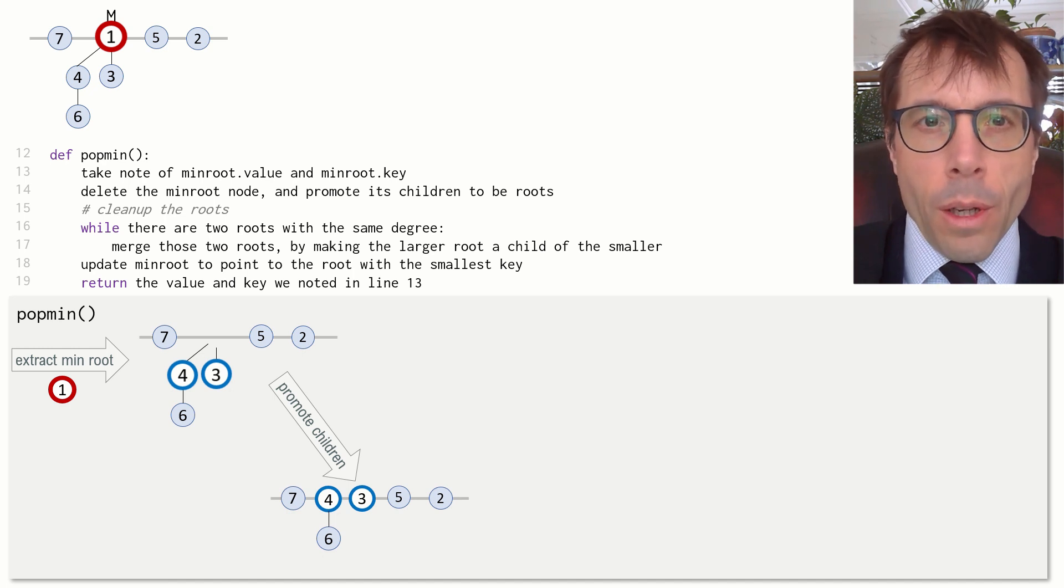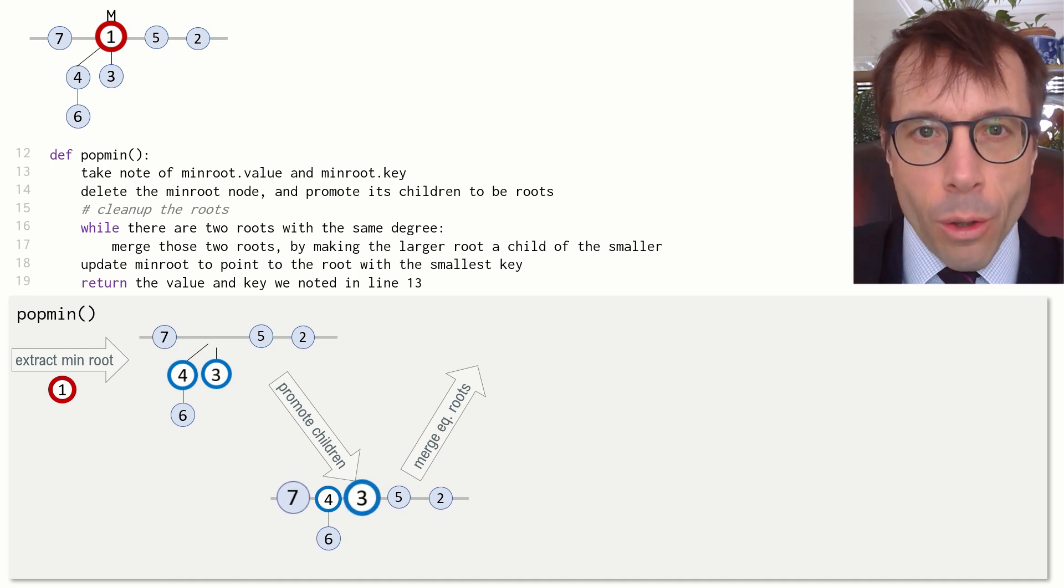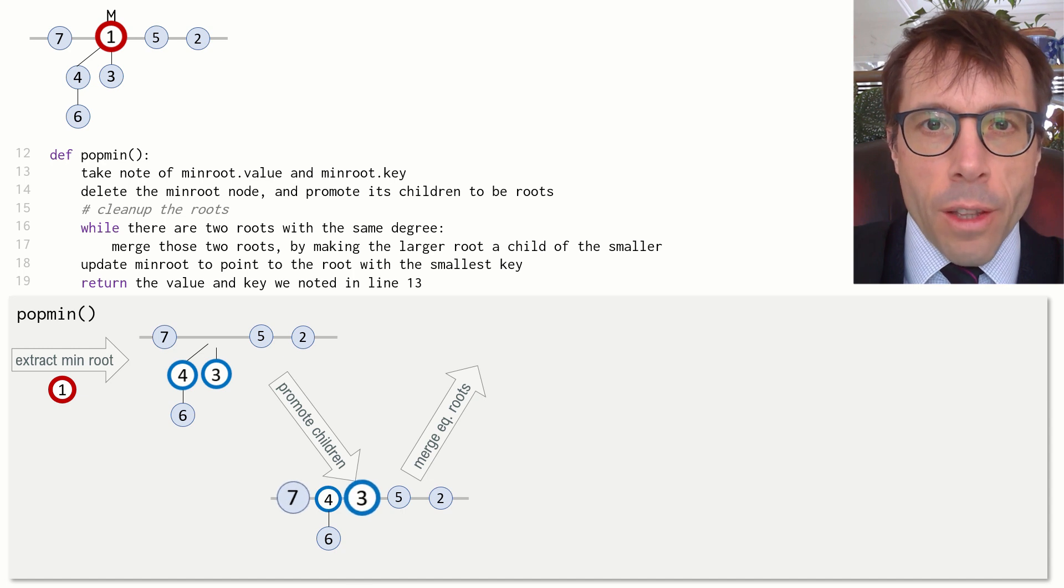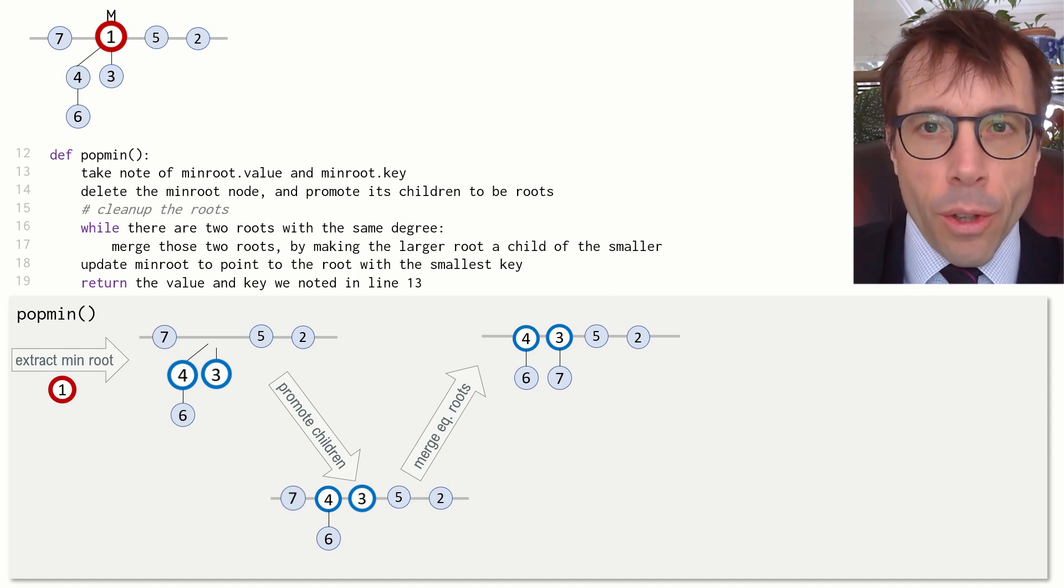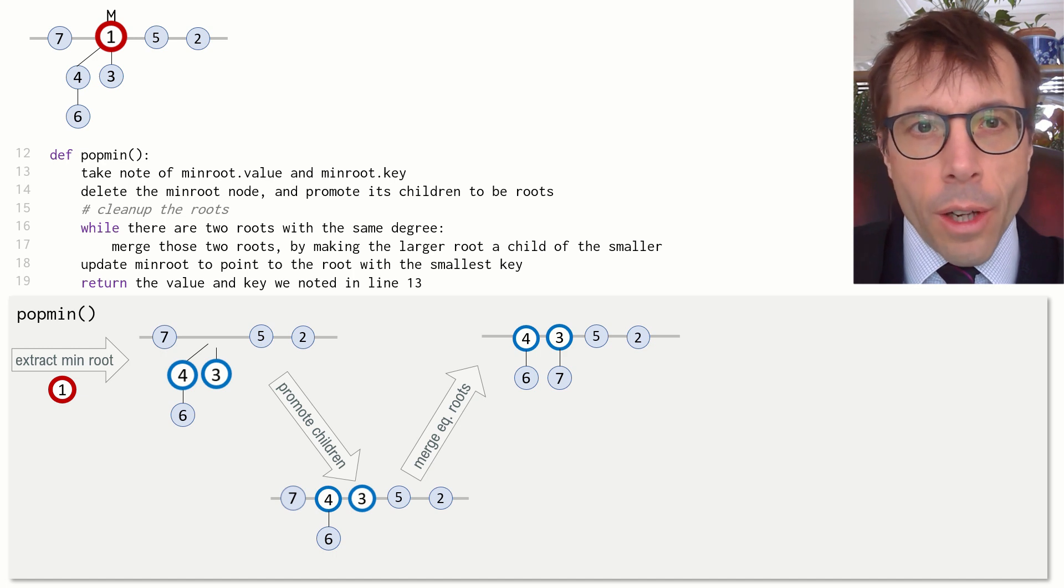Next, we do clean-up, the same sort of clean-up that we did for the binomial heap. We're going to repeatedly merge trees whose roots have equal degree, and we'll keep on doing this over and over again until there are no more left to merge. Here, for example, we could start out by taking the seven and the three, both of them degree zero, and we merge them. We'll put the three on top and the seven underneath so that the heap property is preserved.